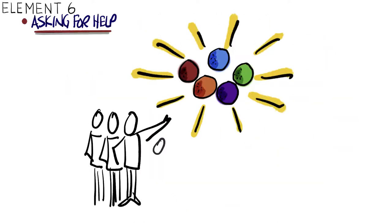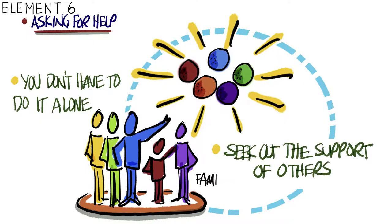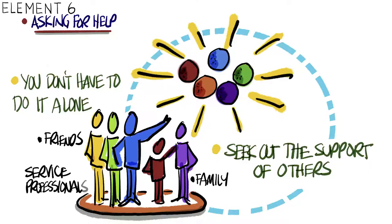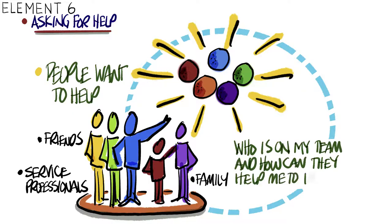Asking for help is element six. You don't have to do it alone. In fact, you shouldn't. Seek out the support of others through family, friends, or service professionals. People want to help. Be clear about what you are requesting. Keep it simple. Often people are honored when asked to do so. Give them the opportunity to help. You won't regret it. Take an inventory of your relationships and ask, who is on my team and how can they help me to implement my plan?